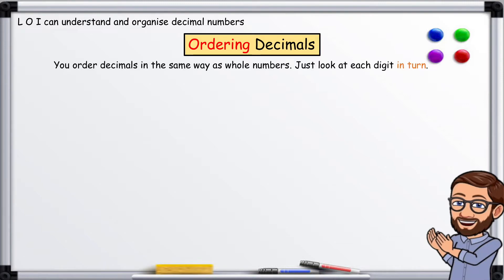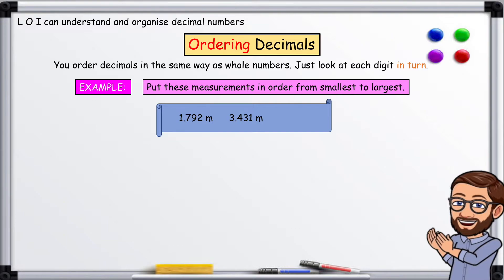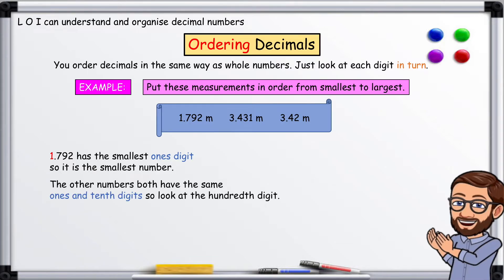Ordering decimals. You order decimals in the same way as whole numbers — just look at each digit in turn. Example: put these measurements in order from smallest to largest: 1.792 metres, 3.431 metres, 3.42 metres. 1 has the smallest ones digit, so it's the smallest number. The other numbers both have the same ones and tenths digits, so look at the hundredths digit. 3.42 is smaller than 3.431 — the 2 is smaller than the 3 in the hundredths column.